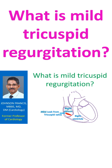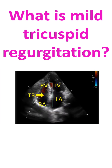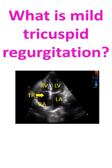The tricuspid valve normally prevents backflow of blood into the right atrium when the right ventricle contracts and pumps blood to the lungs for oxygenation. Trivial to mild leak in the tricuspid valve is common in normal individuals and can be detected by sensitive tests like color Doppler echocardiogram, an ultrasound study of the heart.